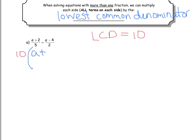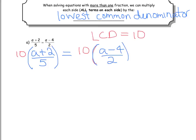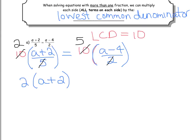We're going to take 10 and multiply it by the left-hand side, then take 10 and multiply it by the right-hand side. Now we're going to do some canceling. 10 divided by 5 gives me 2, and on the right-hand side 10 divided by 2 gives me 5. So we're left with 2 times the bracket (a plus 2) on the left. Notice the denominator is gone — we've gotten rid of the fraction. This will happen every time if you've chosen your LCD correctly.